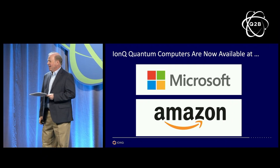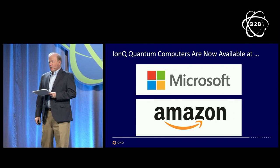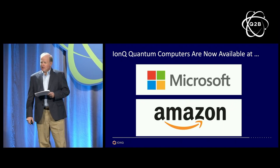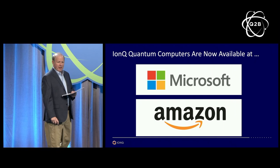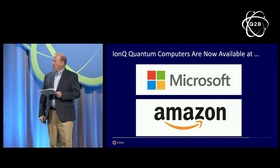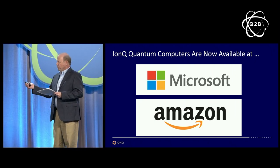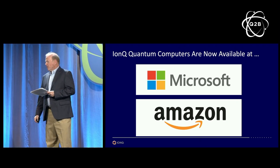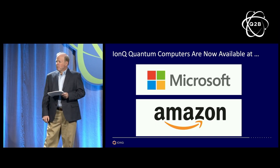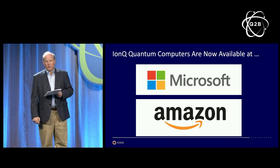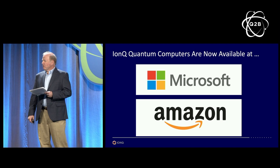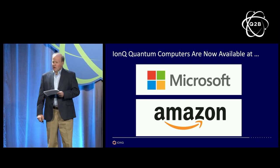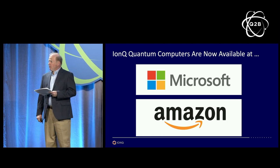All you need is an Azure account or an AWS account to be able to do this. There is no special permission — you don't need to talk to IonQ or any of the other vendors. All you need is one of these cloud accounts. Whether you're working from a garage in a two-person startup or from the world's largest corporation, we've democratized access to quantum hardware. You all have equal access; there's nothing special required, there's no advantage.